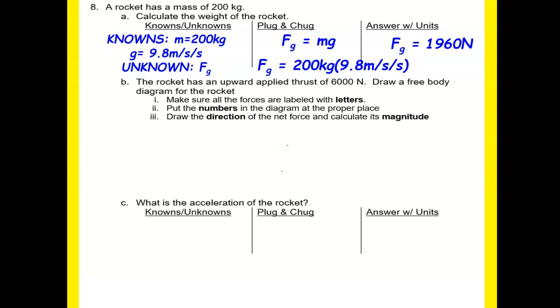So looking at our picture, it's asking us here that we're going to draw a free body diagram, which shows that the thrust, the applied thrust, is 6,000 newtons. And therefore, here is our free body diagram, where our thrust is that direction, up, away, where gravity, of course, is our downward pulling force. So we know that the weight of the rocket is 1960 newtons, and our thrust is 6,000 newtons.